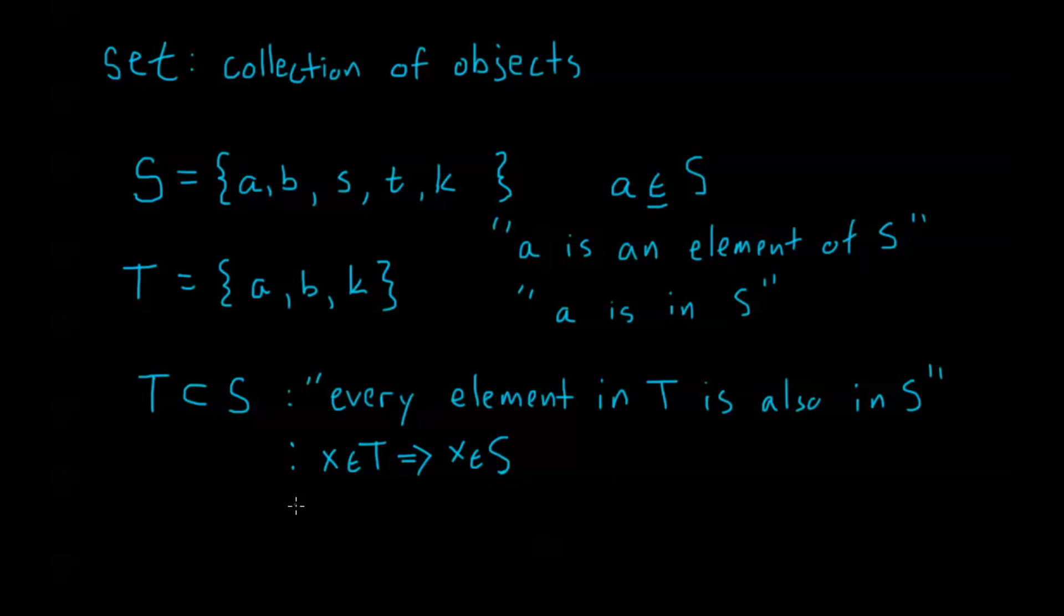Now I could also do this a different way without the implies. We could use this with quantifiers. We could use this kind of upside down A. This means for every, say, X in T, X in S. So this reads the same way. It says, for all X that are in T, those X are also in S. So these are all equivalent ways of saying what this symbol right here means. So now we have a little bit of notation.